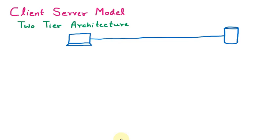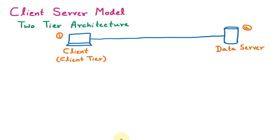In the client-server model there are two types: the two-tier architecture and the three-tier architecture. In the two-tier architecture we have the client on one side and the data server on the other. There are two tiers — the client tier and the database tier — that's why it is called the two-tier architecture.